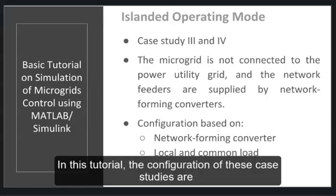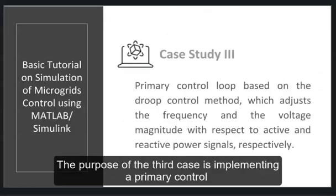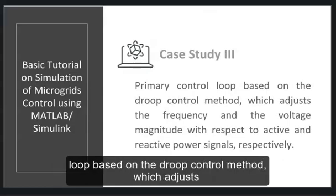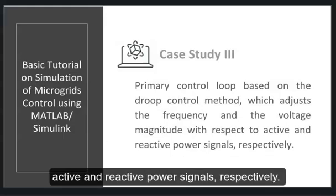In this tutorial, the configuration of these case studies is based on a network forming converter with local and common loads. The purpose of the third case is implementing a primary control loop based on the droop control method, which adjusts the frequency and the voltage values with respect to the active and reactive power signals respectively.